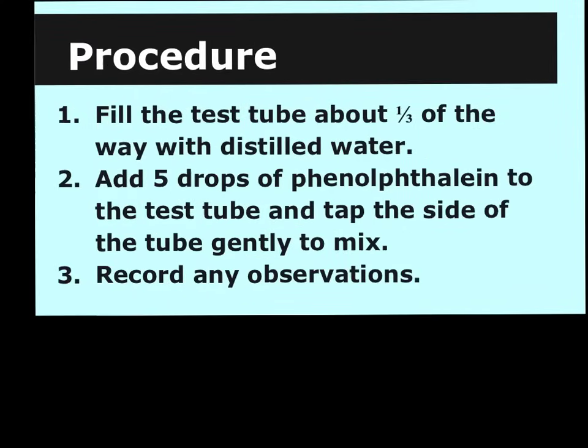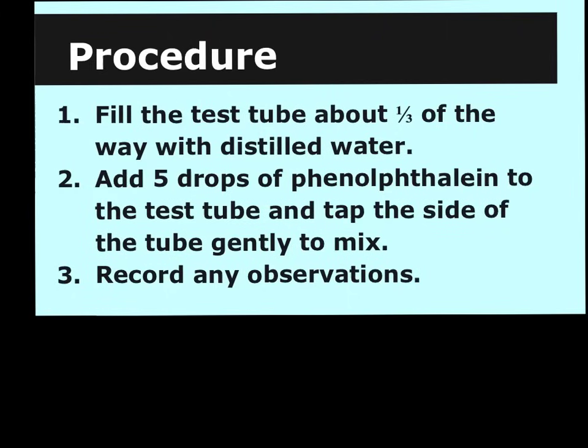In the procedure, you're going to, first of all, put some of the distilled water in a test tube. Then you're going to add five drops of phenolphthalein. And you're going to make sure that it's mixed with the water. And you do that by tapping the side of the test tube with your fingertip very gently. And you're going to record any observations. So what do you see? When you observe, you are using your senses. So anything that you observe about it, whether it's sight or something that you smell, don't taste it. I never recommend that you taste things. But make sure that you write down anything that you notice.